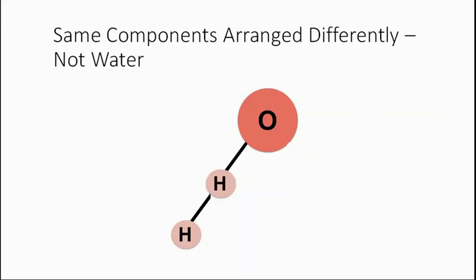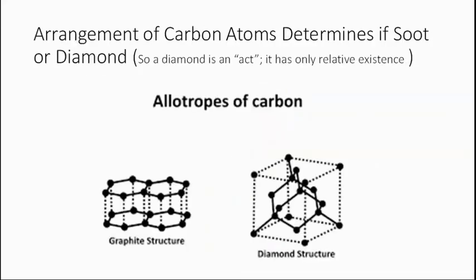Even to go a step further, it's the exact same elements, carbon atoms. Arranged one way, it's the lead in your pencil. It's the soot that you get on your pants when you're near a fireplace. Arranged another way, it's diamonds. So you could consider a diamond as an act, the act of the carbon atoms keeping the proper relation to each other as they go through time. It also would have relative existence and dependent existence.